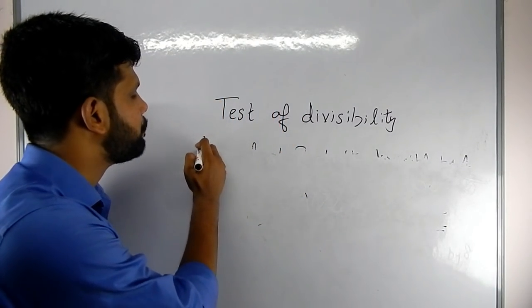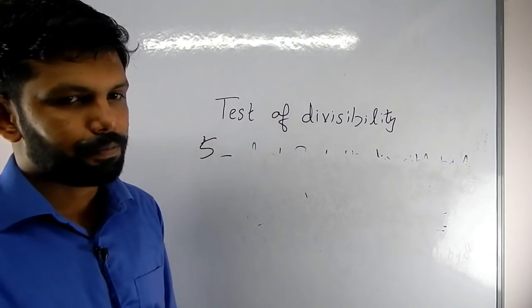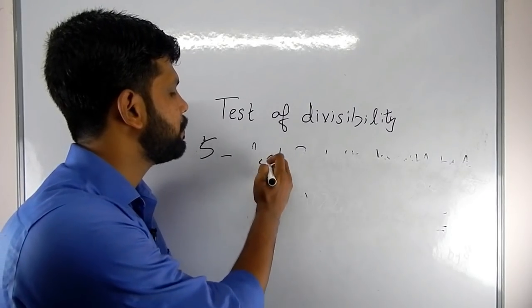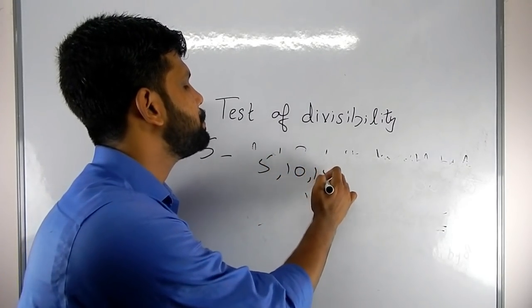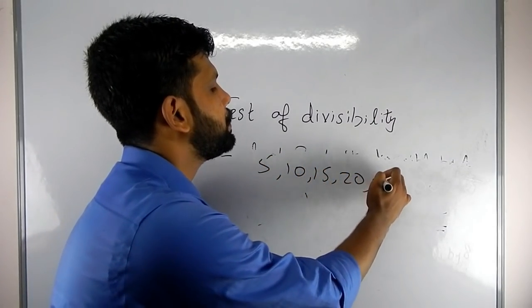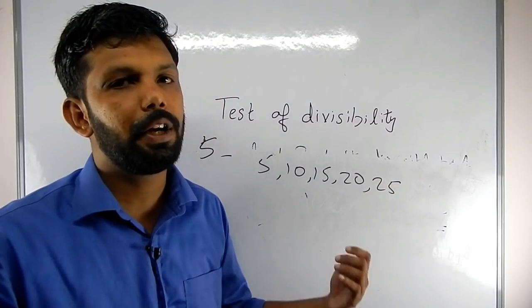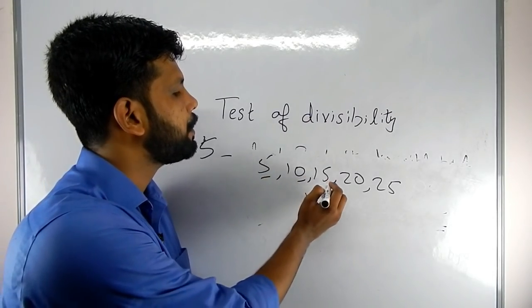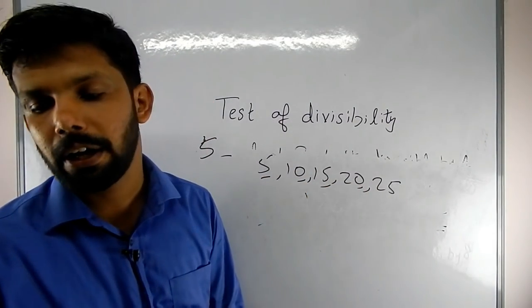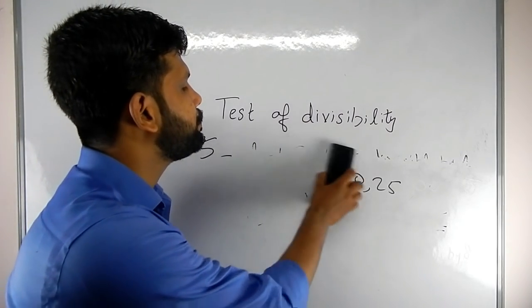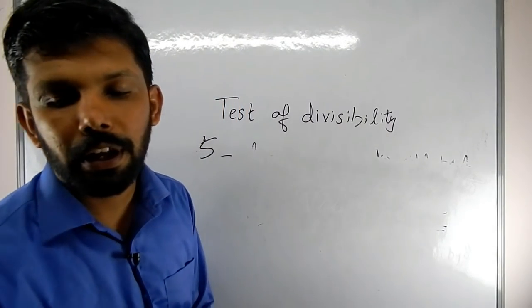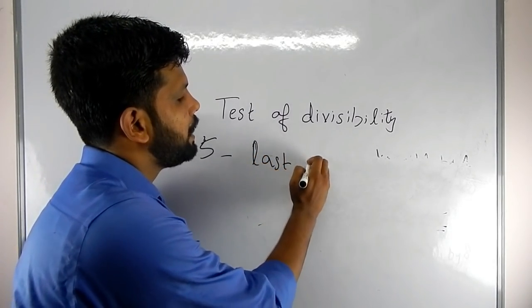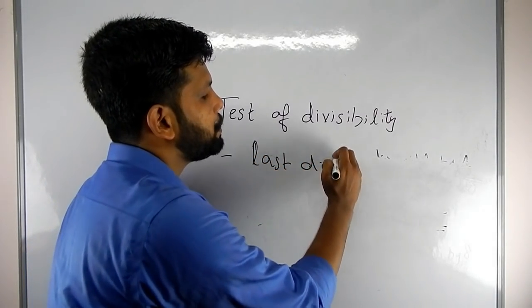Divisibility rule of 5: if you have a number like 5, 10, 15, 25, you can use the last digits. In multiples of 5, the last digit is always 5 or 0. So, if the last digit of a number is 5 or 0, then the number is divisible by 5.